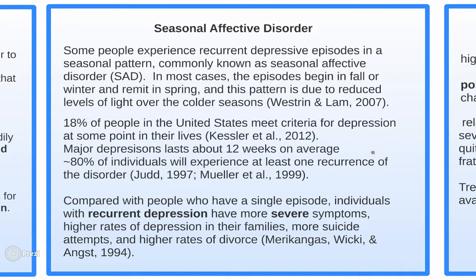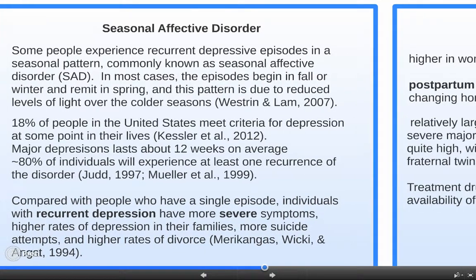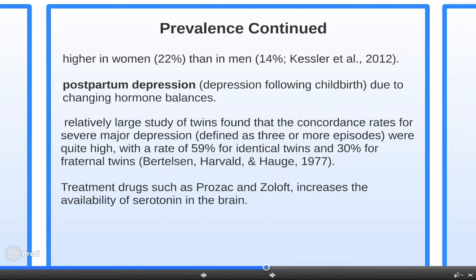About 18 percent of people in the U.S. meet criteria for depression at some point in their lives. Major depressive episodes last about 12 weeks on average. About 80 percent of individuals will experience at least one recurrence of the disorder. Compared with people who have a single episode, individuals with recurrent depression have more severe symptoms, higher rates of depression in their families, more suicide attempts, and higher rates of divorce.